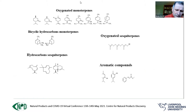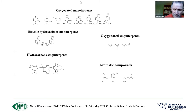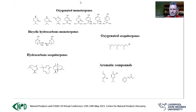Based on their chemical structures, essential oils can be categorized into oxygenated monoterpenes, bicyclic hydrocarbon monoterpenes, oxygenated sesquiterpenes, hydrocarbon sesquiterpenes, and aromatic compounds.